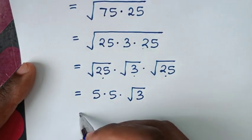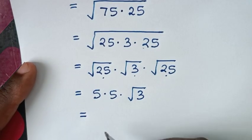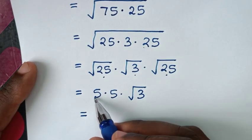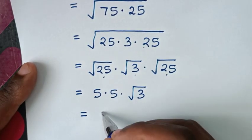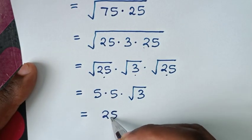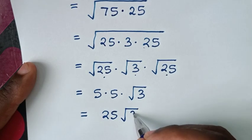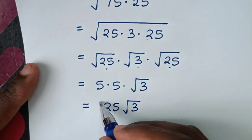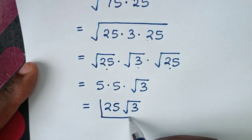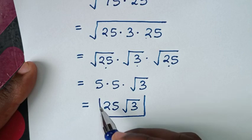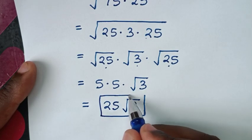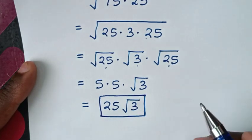Then it will be equal to 5 times 5, which is 25, times square root of 3. Therefore, 25 square root of 3 is our final answer.